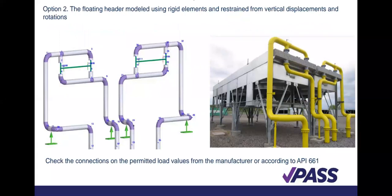Using the header modeled with rigid elements, the constraint changes from vertical displacement and rotation. Here we are using the floating header. For the floating header, it is modeled using rigid elements, and the rest is constrained. This is option two — so if you don't use option one, which is the previous one we just looked at, you can also use this option for checking your air cooler. There are also many supports at the bottom to help or assist your pipe to avoid deformation.